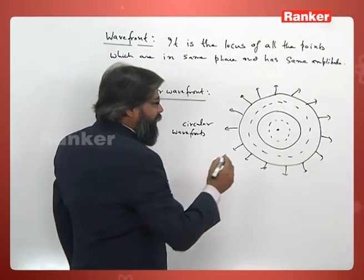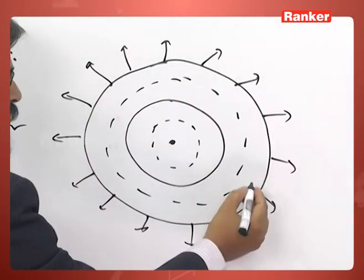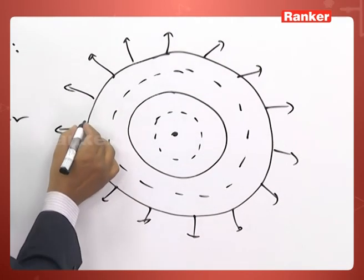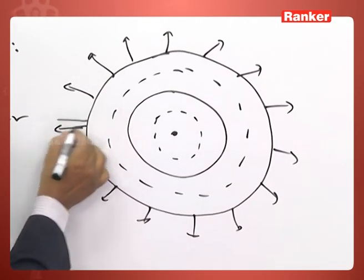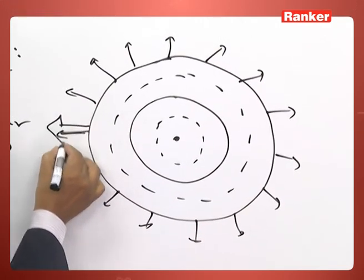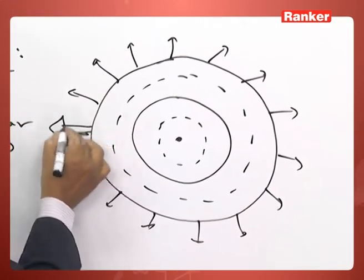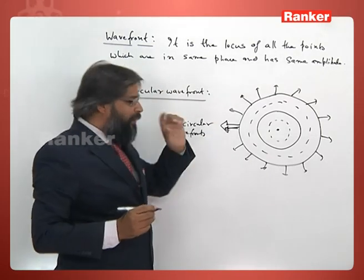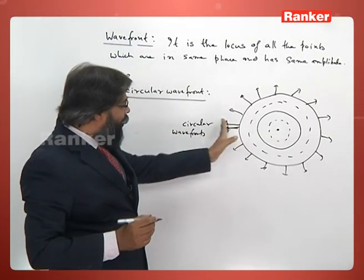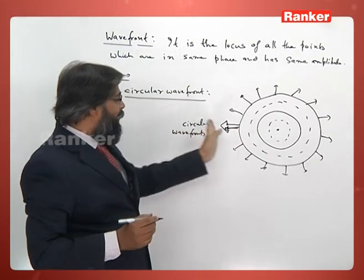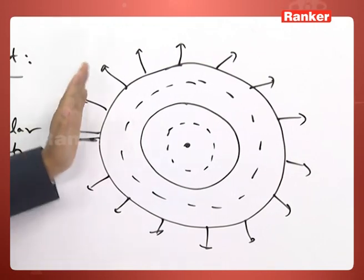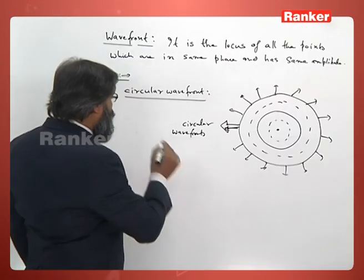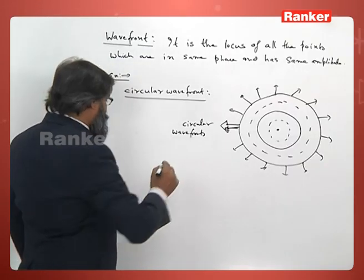This is the wavefront, and the wave propagates along the normal to the wavefront. This is a property of wavefront — the ray will always propagate normal to the wavefront, as in this circular wavefront.